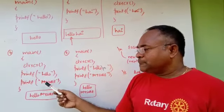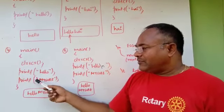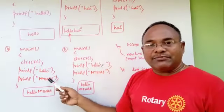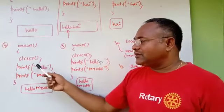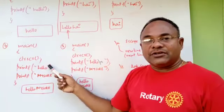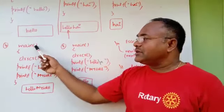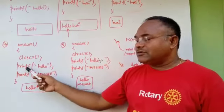You just clearly observe this. In the second statement, whatever we put within double quotations is in capital letters. We can use capital letters, symbols, anything within double quotations. We are not supposed to use capital letters in main, CLR SCR or printf.